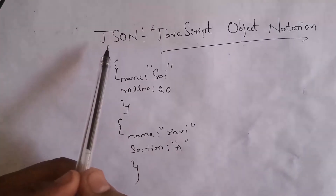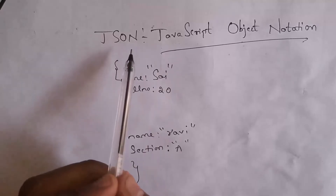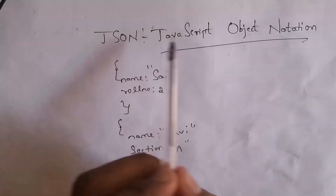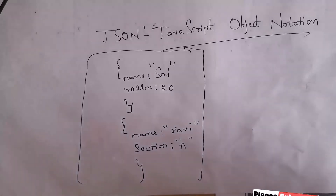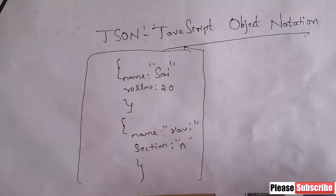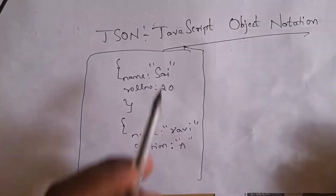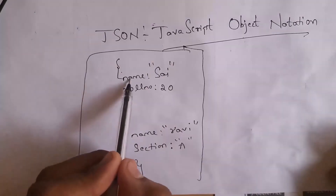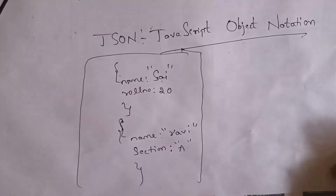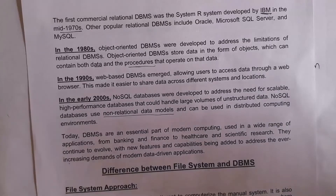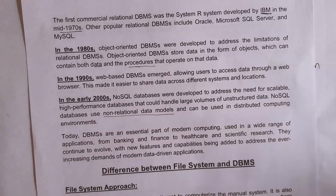JSON is an example of a NoSQL database, where JSON stands for JavaScript Object Notation. In NoSQL database, we do not store data in the form of tables; instead, we store data in the form of classes and objects. This is an example of JSON — here I have name SAI and roll number 20, and again inside brackets I have name Ravi and section A. Among all these databases, relational databases remain the most widely used.